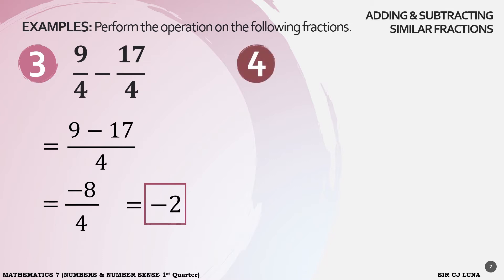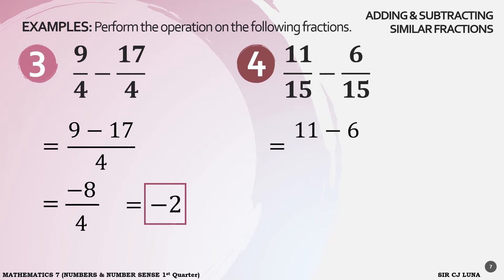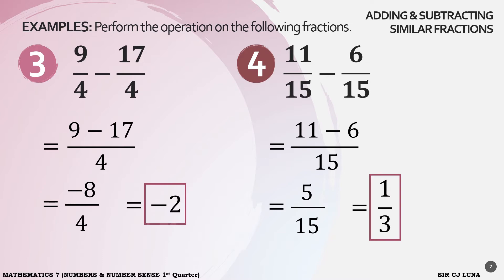Example number 4: 11 over 15 minus 6 over 15. Subtract the numerators. We have 11 minus 6 all over the common denominator, 15. 11 minus 6 is equal to 5 over 15. The GCF of our numerator and denominator is 5. Therefore, the final answer is 1 over 3.